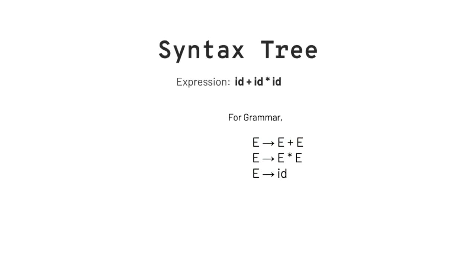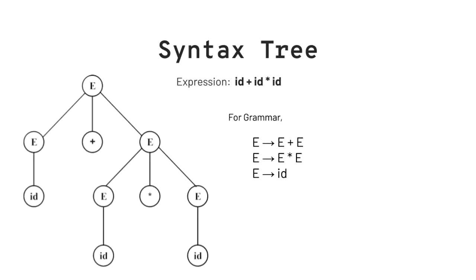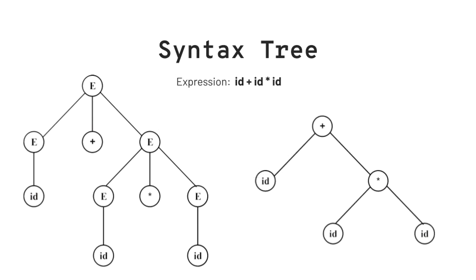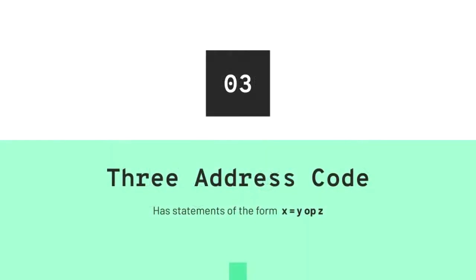Next up is syntax tree representation of intermediate code generation. Let us consider the grammar: E derives E plus E, E derives E star E, and E derives id. The parse tree for this grammar will look like this, whereas its condensed form — a parse tree without presence of non-terminals — will look like this. This is what we call a syntax tree.